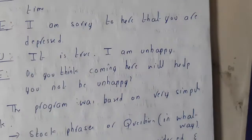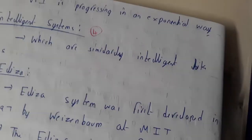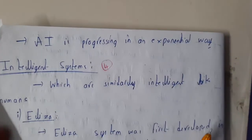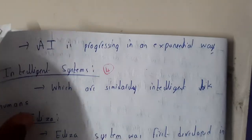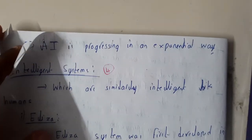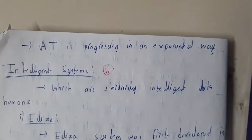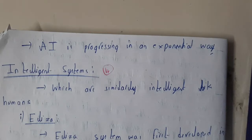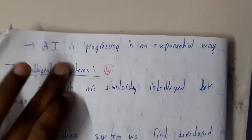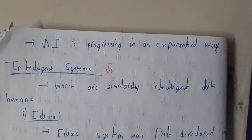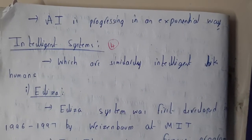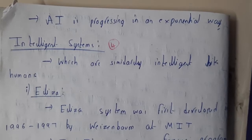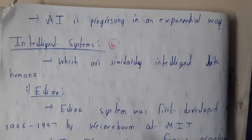All these developments are exponential. In the initial stages, progress is really slow, but once it gets momentum, it develops rapidly — that's what's happening with AI nowadays. We've covered only a few important points of history. In the next lecture, we'll go through intelligent systems and I'll be discussing ELIZA. Thank you for watching.